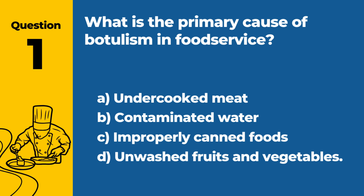Question 1: What is the primary cause of botulism in food service? a. Undercooked meat. b. Contaminated water. c. Improperly canned foods. d. Unwashed fruits and vegetables. Answer: c. Improperly canned foods. Botulism is primarily caused by improperly canned foods, where the bacteria Clostridium botulinum thrives in anaerobic conditions and produces toxins.